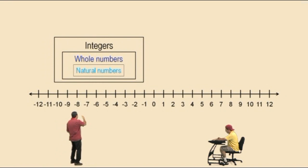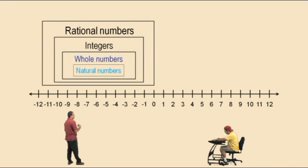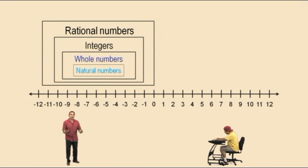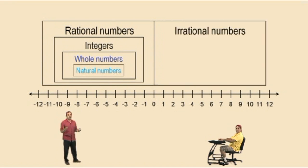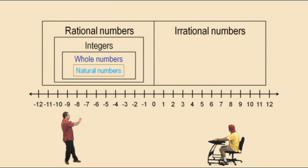What about in between the markings on the number line? Those are the fractional values, and that set that includes the fractions is called the rational numbers. The rational numbers include the fractions, and those are values that will fall somewhere in between these integer values that are marked on the real number line. So rational numbers are the fractions.